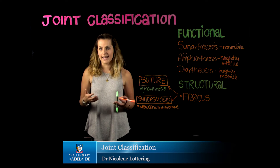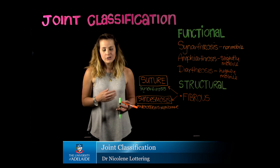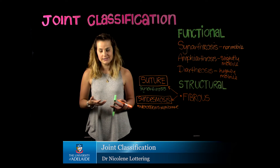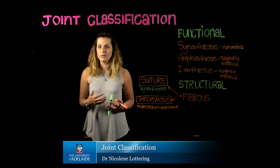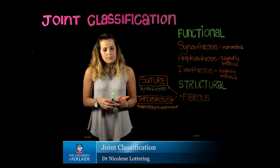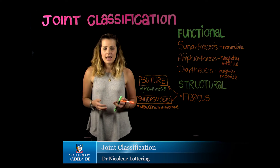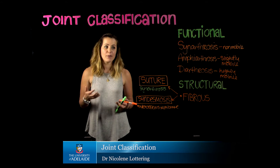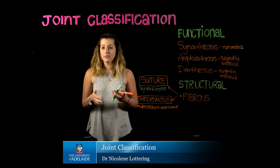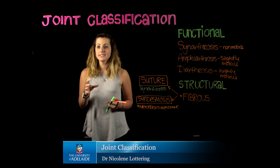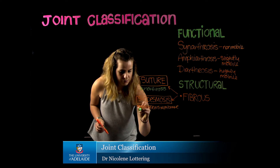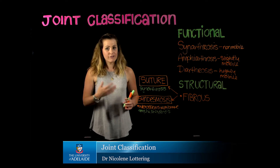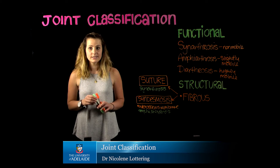We also find syndesmosis in the joints of the vertebral column, specifically when looking at the joints associated with adjacent neural arches — our zygapophysial joints, for instance. The ligaments associated with those joints will be syndesmosis, as well as structures such as the ligamentum flavum. Because these are more associated with joints, they do allow a slight degree of movement, so we say they are amphiarthrotic joints. As the vertebrae move, the ligamentum flavum has some capacity to move.